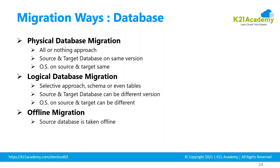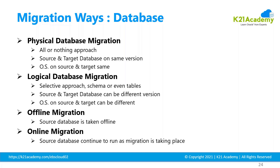You can go with offline migration, in which the source is taken offline, you take a backup of the databases, and then move it. Or you can go with online migration, in which your source database is running on-premise while you do the migration — using a hybrid Data Guard setup where your primary is the source database and you create a Data Guard standby on the cloud. Once everything is ready, you can switch the role.